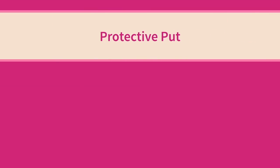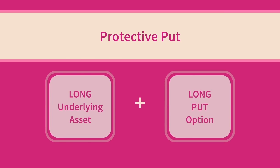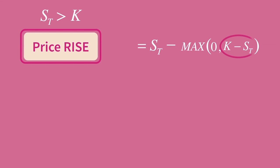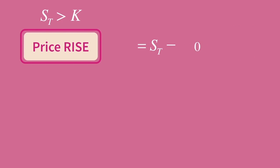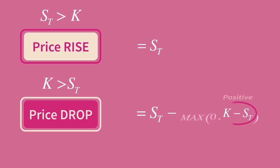A protective put position is a combination of going long the underlying asset and buying a put option on the same asset. The value of the underlying at the end of the period will be ST, and the value of the long put option will either be 0 or K minus ST. If the price rises, the put option will expire worthless, so the value of the portfolio will be ST. If the price falls, the put option will have some positive payoff, so the portfolio value will be ST plus K minus ST, which is just K.